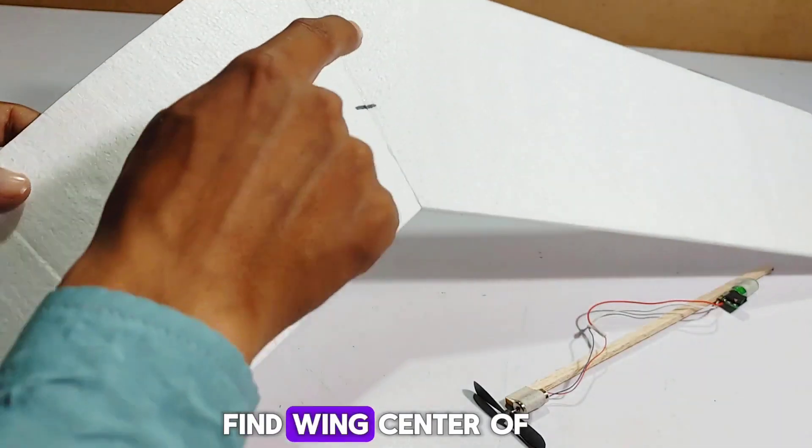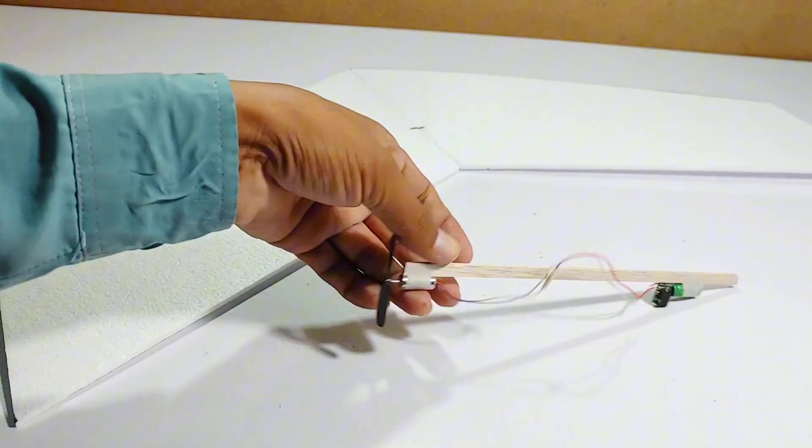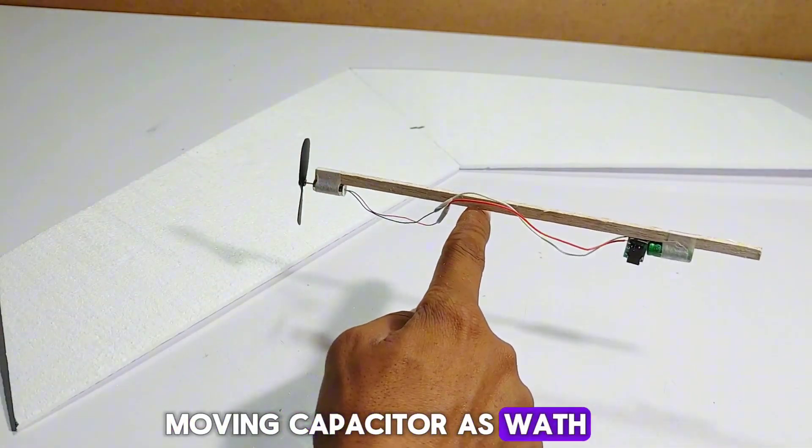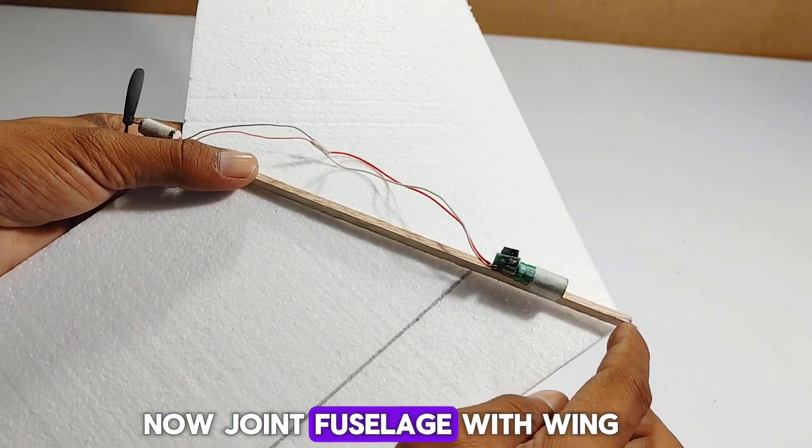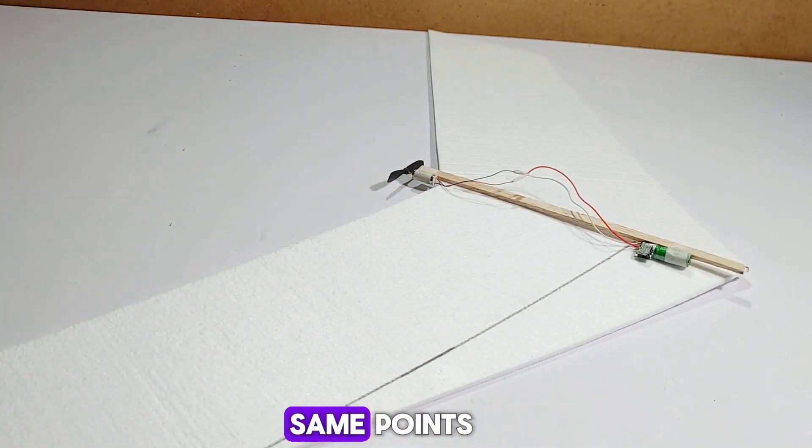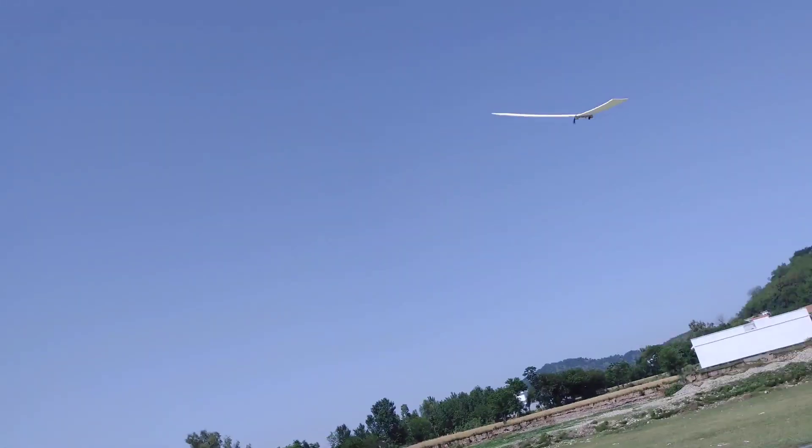Find wing center of gravity from template. Find and adjust fuselage center of gravity by moving capacitor as weight. Now joint fuselage with wing. Make sure that CG points are the same. The plane is ready for flight test.